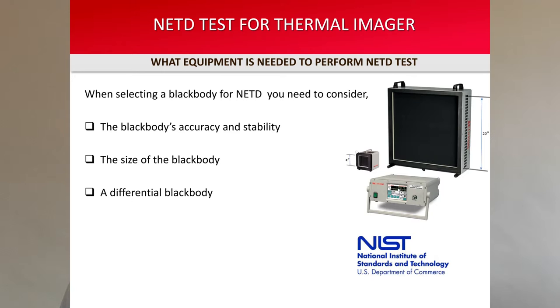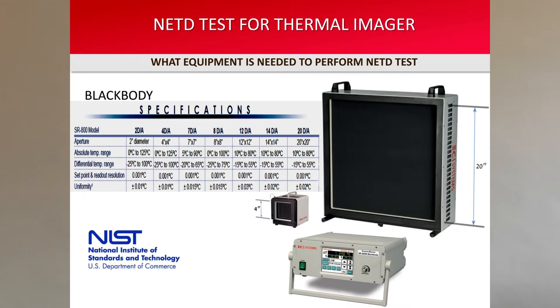When selecting a black body for NETD, you need to consider: one, the black body's accuracy and stability. Since the test is often performed with millikelvin resolution, it is important to use an accurate black body and verify that it is certified as NIST traceable — NIST stands for the National Institute of Standards. Two, the size of the black body is also important; try to select one with a large enough surface area to also perform tests like uniformity. Three, a differential black body is required for the NETD measurement, as the test is run by measuring the temperature of the black body relative to the temperature of the target, and the black body controller constantly monitors the target's temperature.